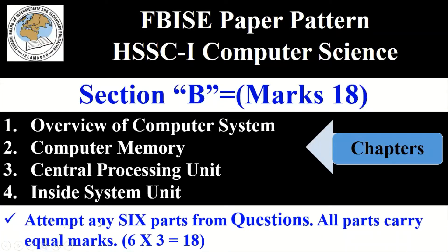To get 18 marks in Section B, you have to attempt any six parts from the given questions. Each question carries three marks, so six multiplied by three equals 18. You will get 18 marks by attempting six questions.